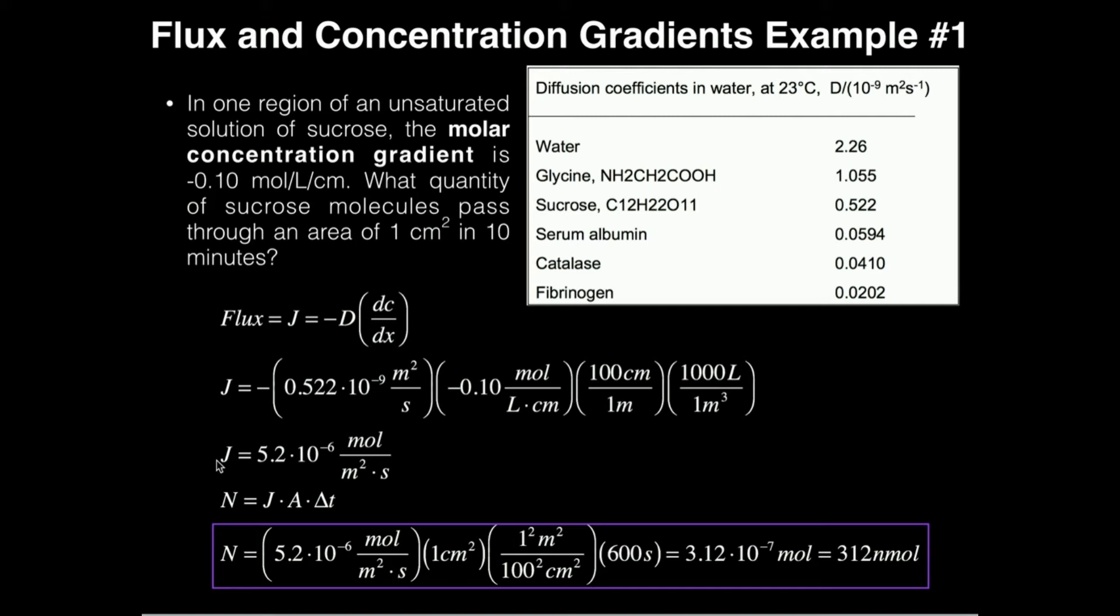Now I have the flux. And in the problem, I also have the area through which the molecules are passing and the time interval. I know that the number of molecules, or in this case, the number of moles that pass through that area is equal to J, the flux, times the area times the time interval.